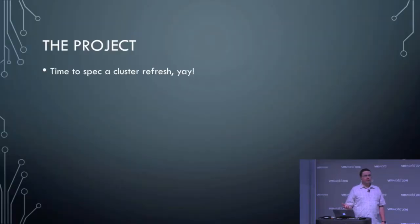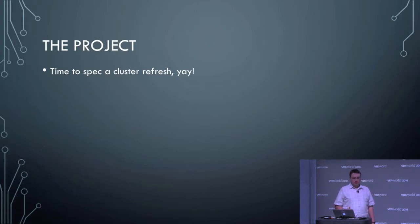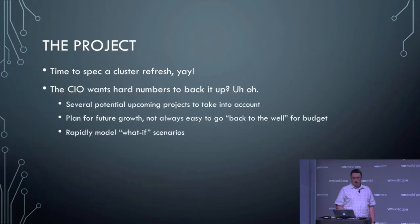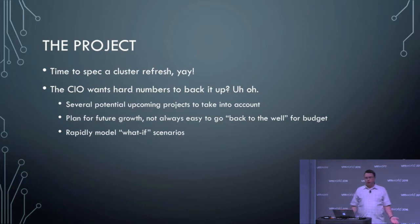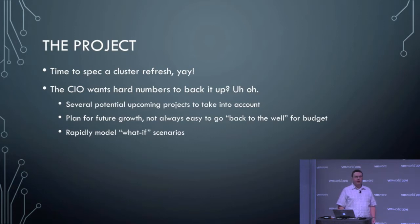The project was: it's time to spec our cluster refreshes. This is a good thing — it's time to get new hardware, put new stuff in, all good. But the new CIO wants numbers. He wants to back up these purchases. We've got potential upcoming projects that haven't come to fruition yet. We've got a plan for future growth, and it's not easy to always go back to the well for more budget after the fact if we undersized to begin with.